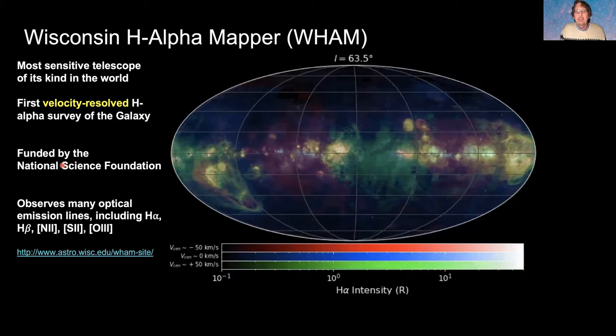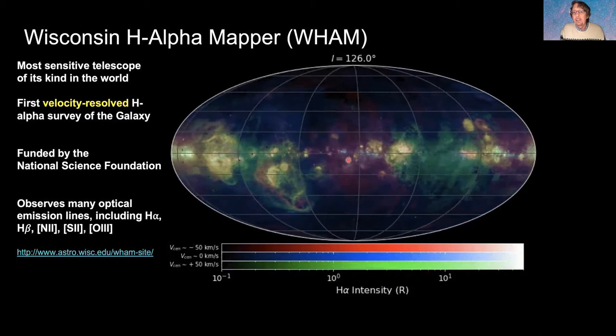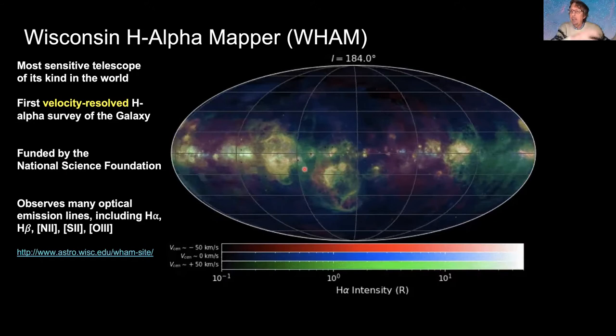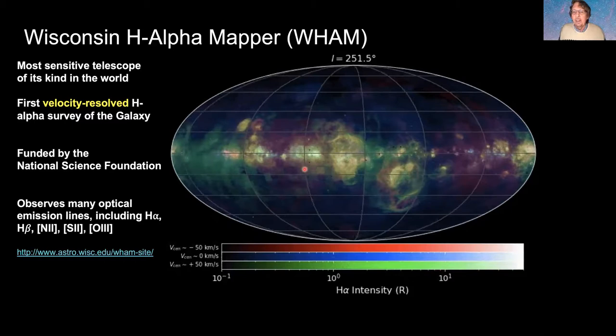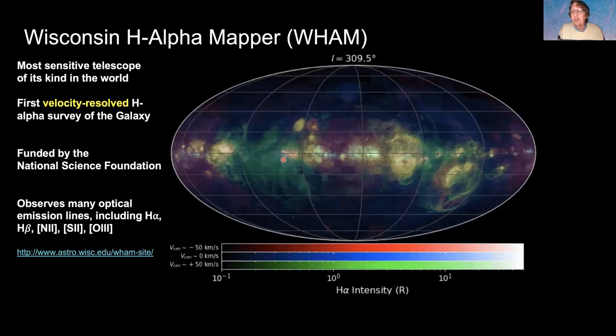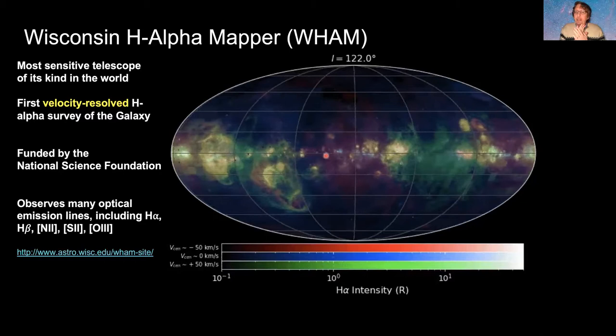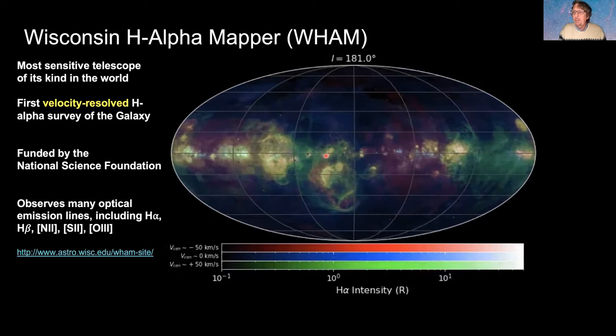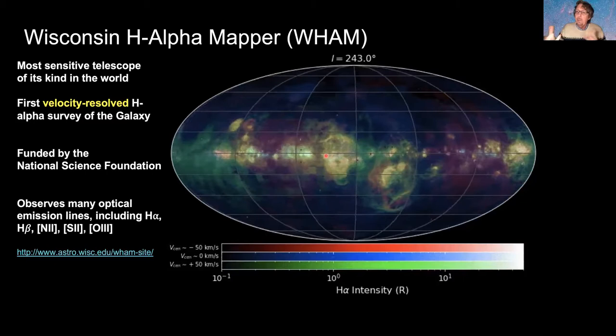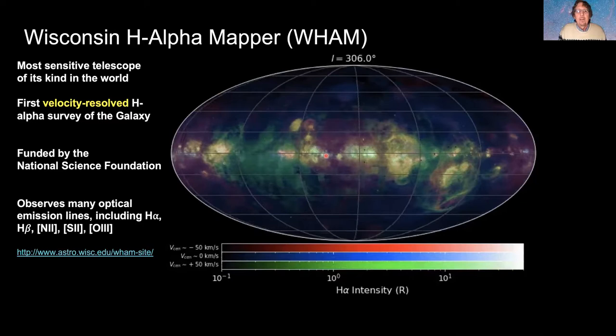WHAM shows different directions of the galaxy and what the ionized gas looks like — similar to the image shown at the start of the talk, but with velocity information. The different colors represent velocity-resolved emission: ionized gas seen not just at a single velocity but across a range. This produces a Doppler shift in the H-alpha line, and by measuring H-alpha brightness as a function of velocity, and knowing how gas moves in the galaxy, we can estimate distances.